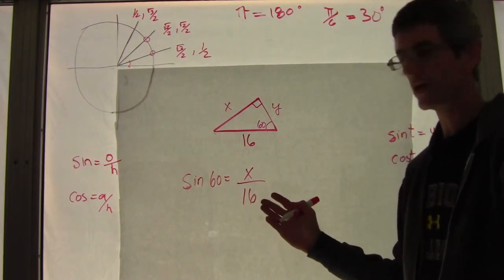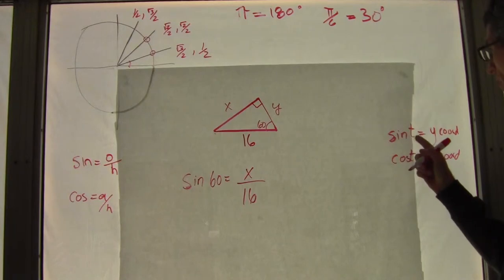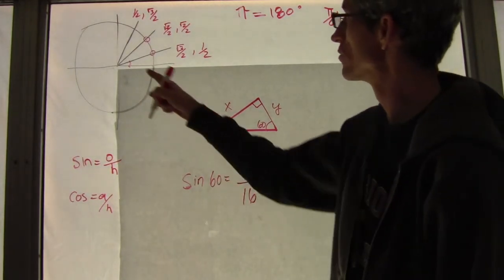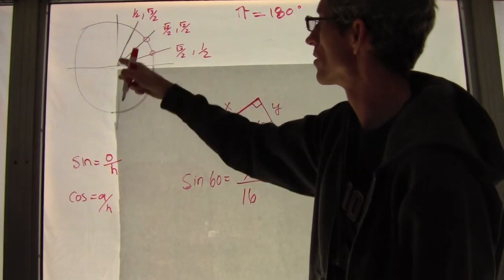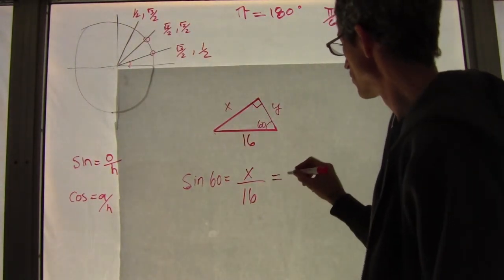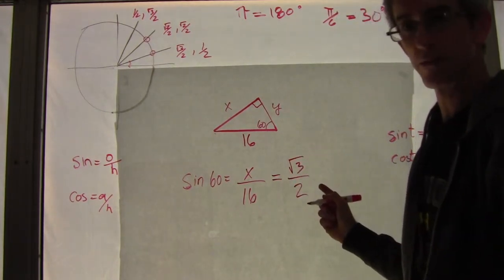So I'm going to do sine of 60 equals opposite x over hypotenuse 16. So I've got part of my equation ready, but I also know from the unit circle that sine of an angle is the y coordinate. So what's the sine of 60? So I go up here. This is the 60 degree. What's the y coordinate? Well, it's square root of 3 over 2. So I know it's also equal to square root of 3 over 2.